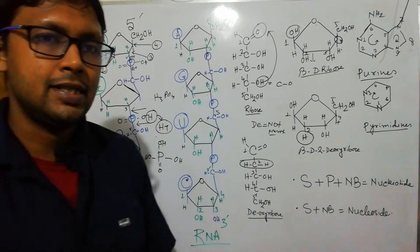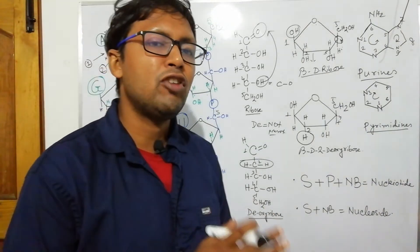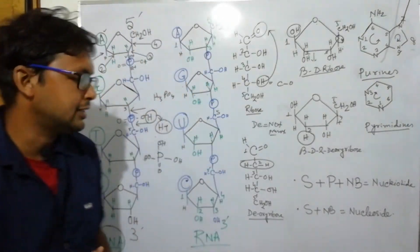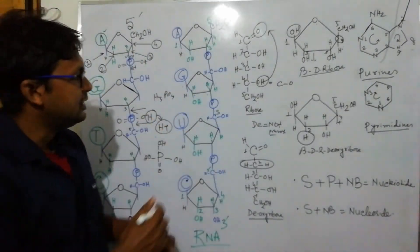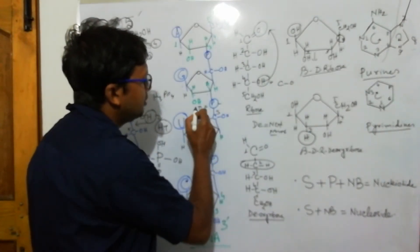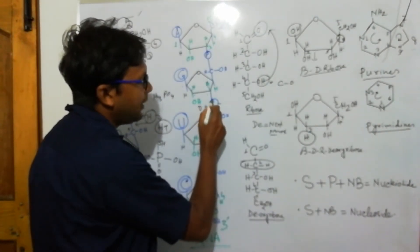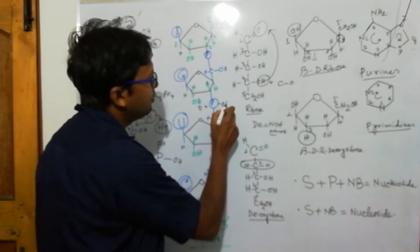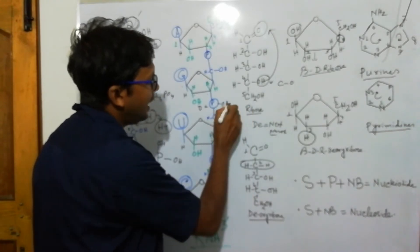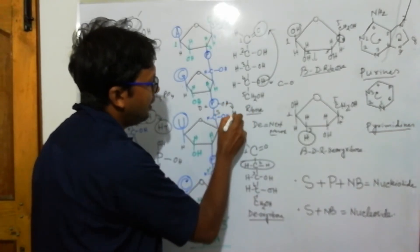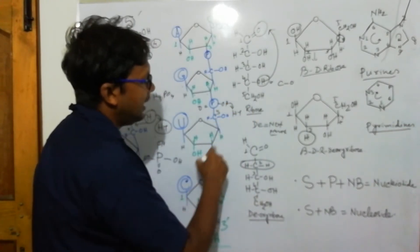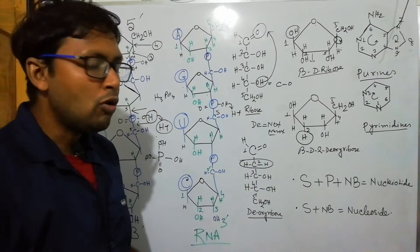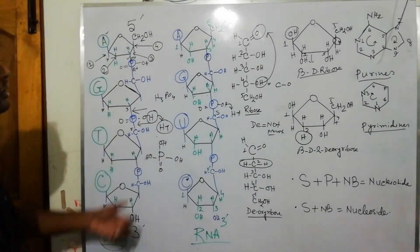So why is it called an acid? Whenever phosphate is present in the DNA or RNA structure, two OH groups are involved in phosphodiester linkage and one OH group remains. The hydrogen from this remaining OH group is released into the solution as H⁺ — a proton. This is why they are called acids.